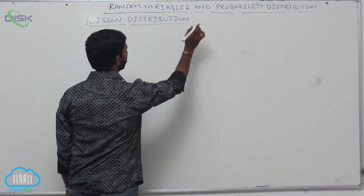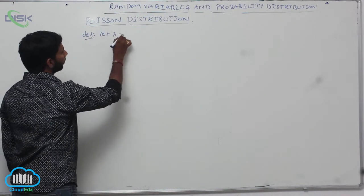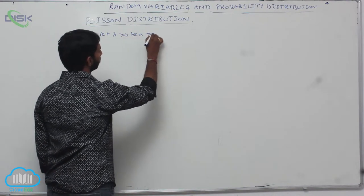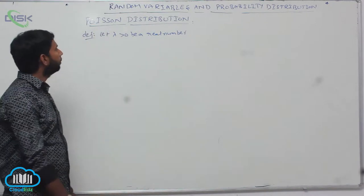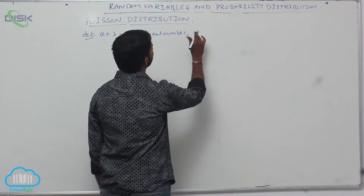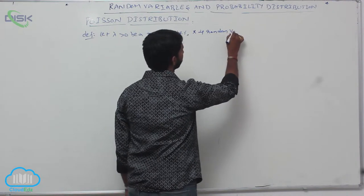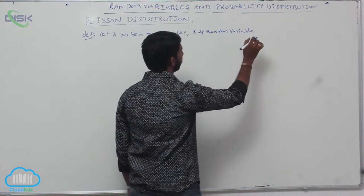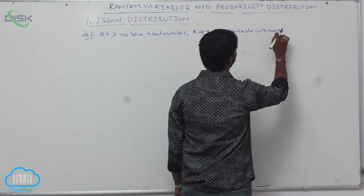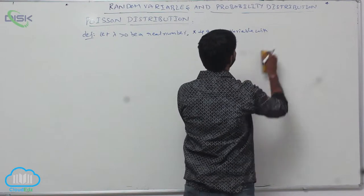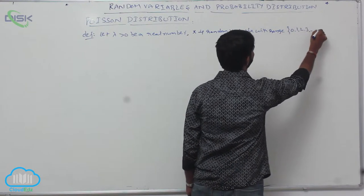The next topic is Poisson distribution. Let lambda greater than 0 be a real number. Capital X is a random variable with range 0, 1, 2, 3 and so on. It is said to be Poisson distribution.